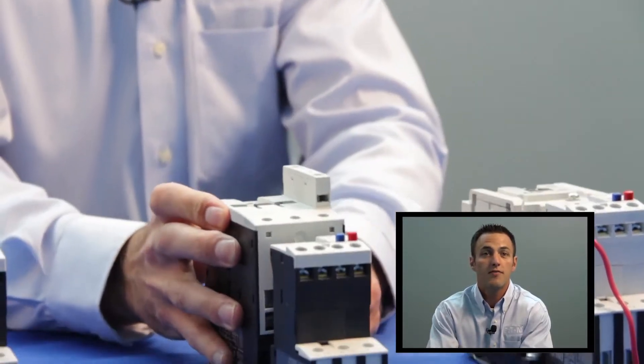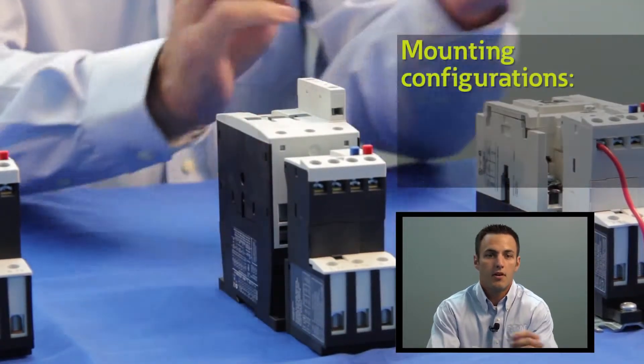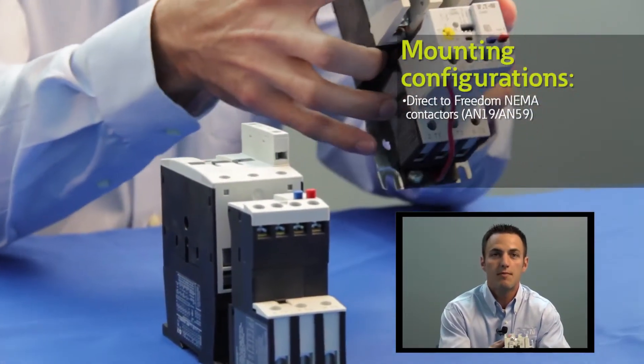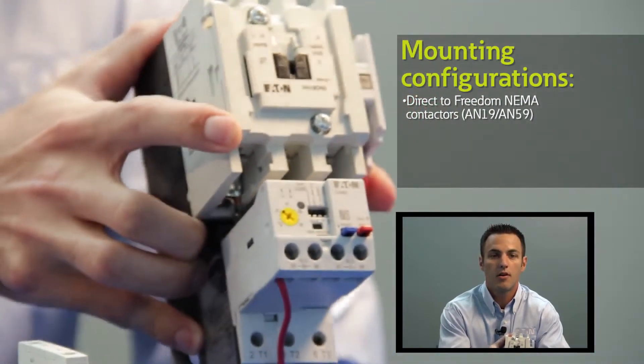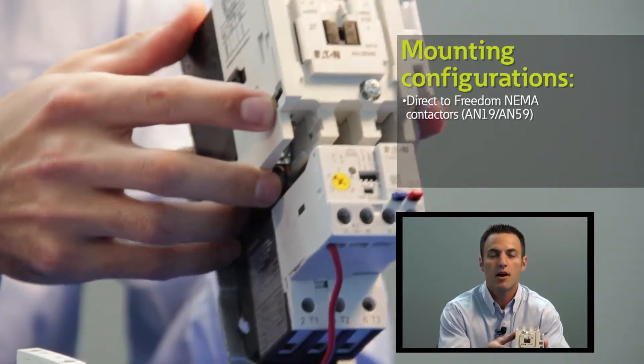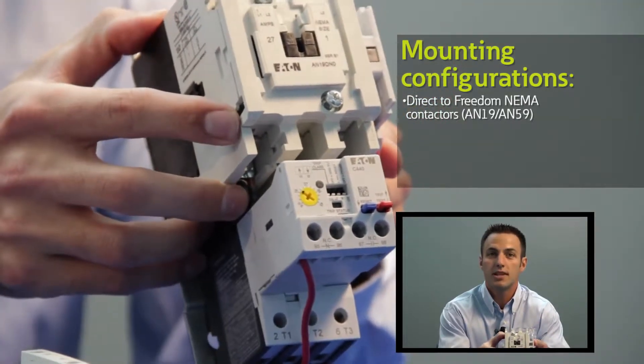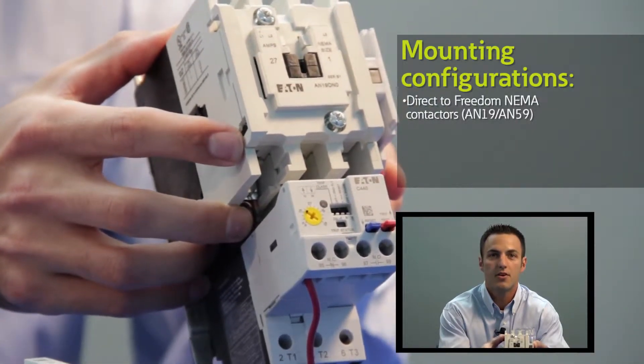There are actually four different mounting configurations available for this overload. The first is direct mounted to a NEMA freedom contactor up to 140 amps or a NEMA size 4. We designate this starter solution as the AN19. Above 140 amps we use external current transformers that can be used to cover ranges up to 1500 amps.